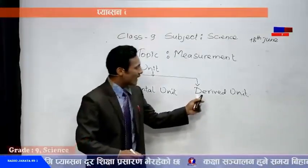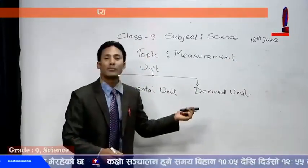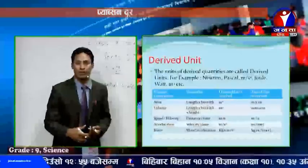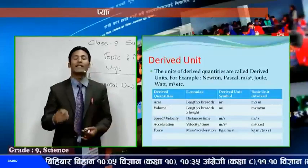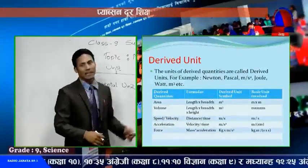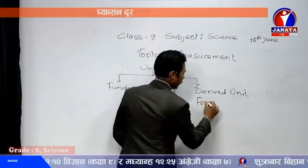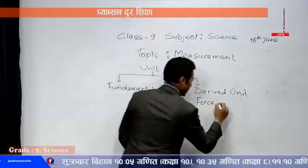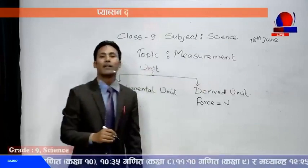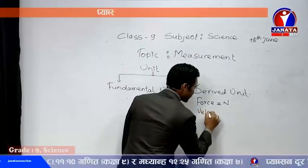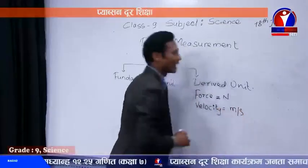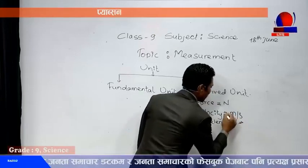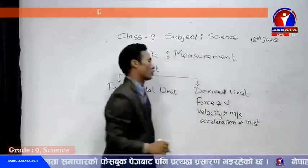Next, derived units are the units used to express derived quantities. Derived quantities you have learned include velocity, acceleration, force, and weight. The unit of force is Newton, which is a derived unit. The unit of velocity is meter per second, also a derived unit. The unit of acceleration is meter per second squared, which is also a derived unit.